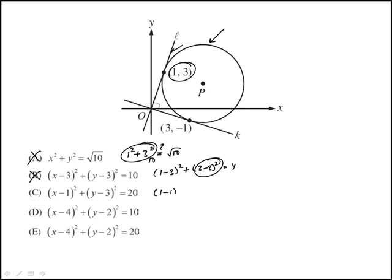And then this would be (1 - 1) squared plus (3 - 3) squared, is that equal to 20? That's actually 0 plus 0. And then we're left with that one.